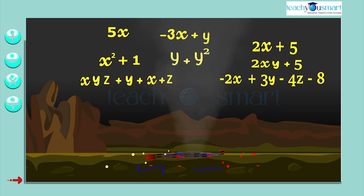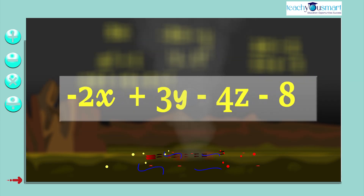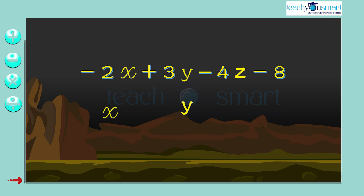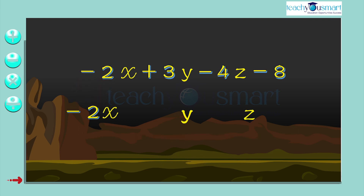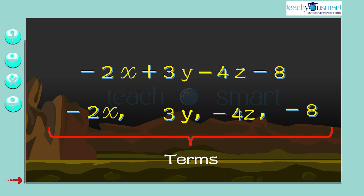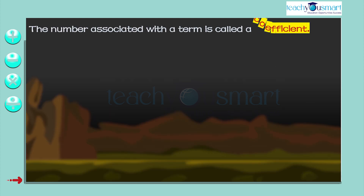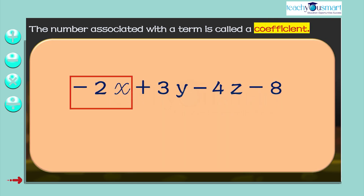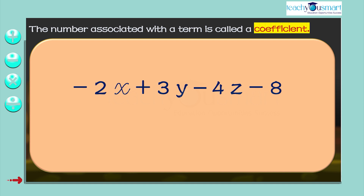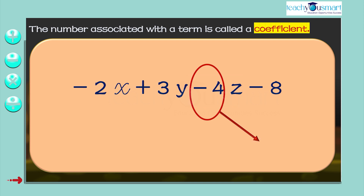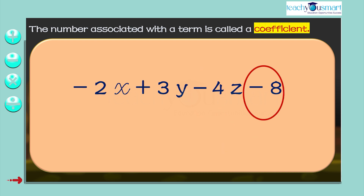Let's recollect terms, variables, and coefficients in an algebraic expression. In this expression, x, y, and z are the variables, and minus 2x, 3y, minus 4z, and minus 8 are the terms. The number associated with a term is called a coefficient. In the term minus 2x, minus 2 is the coefficient of x; in 3y, 3 is the coefficient of y; and in minus 4z, minus 4 is the coefficient of z. The term minus 8 has no variable associated with it, therefore it is called the constant term.